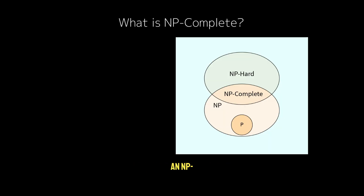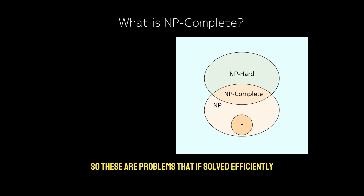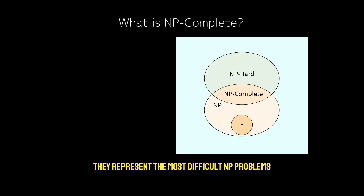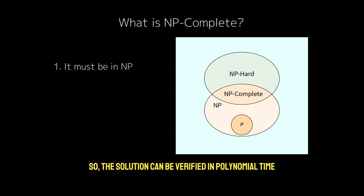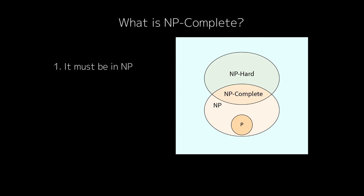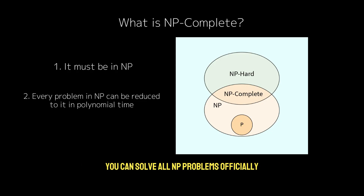Now, what is NP-complete? An NP-complete problem is a special subset of NP problems — these are the hardest problems in NP. If solved efficiently, they would allow us to solve all NP problems efficiently. A problem is NP-complete under two conditions: one, it must be in NP, so the solution can be verified in polynomial time; and two, every other problem in NP can be reduced to it in polynomial time. This means that if you can solve one NP-complete problem efficiently, you can solve all NP problems efficiently by transforming them into this problem.